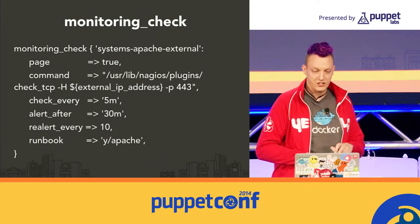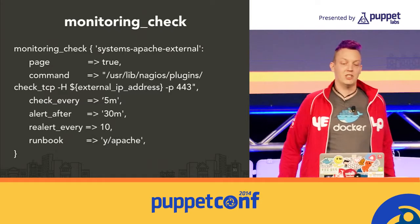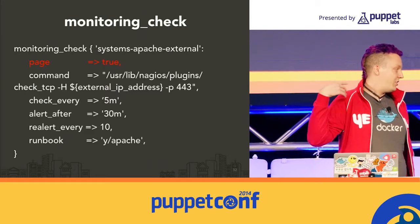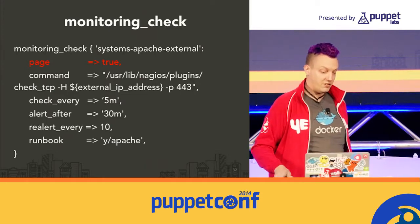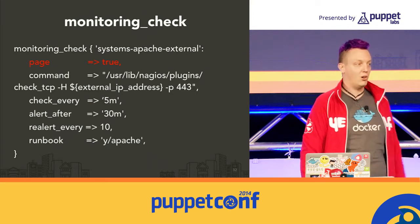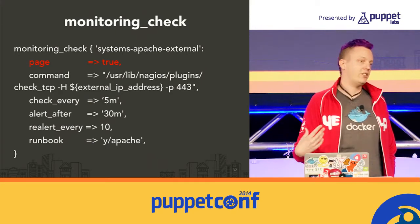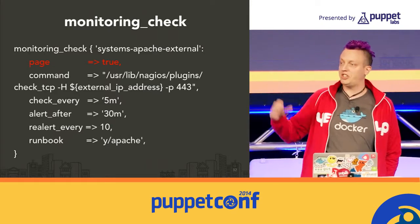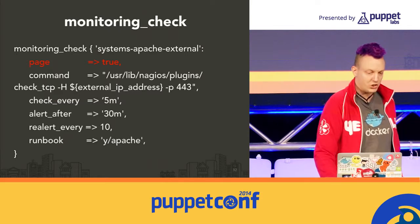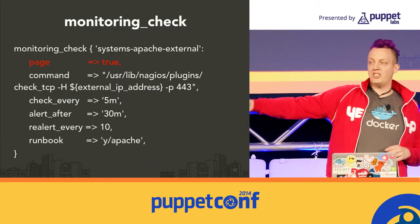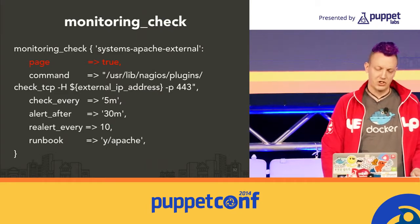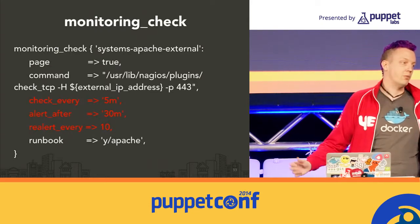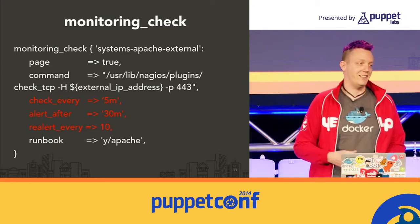Our key Sensu abstraction is a Puppet define called monitoring_check. All these parameters are our custom metadata. There's a flag to say this alert is important, page someone — that defaults to false. Our machines know which team owns them, so by default checks will go to the team that owns that machine — so Elasticsearch hosts are owned by the search team and checks go there automatically. You can override this of course, sending some things to operations and some to DBAs. One of the things we didn't like about Sensu was the tunables for how often to alert, so we just rewrote them using the extension metadata.